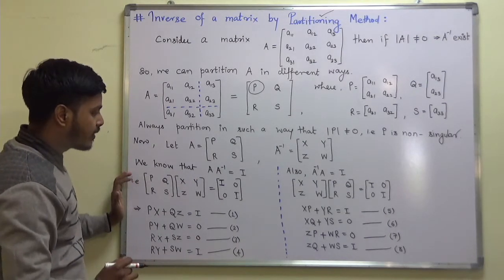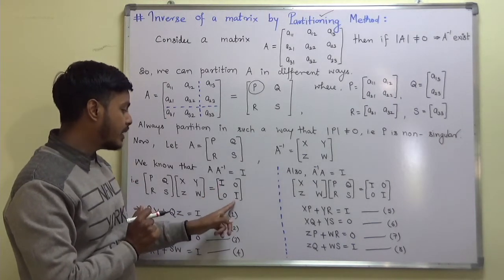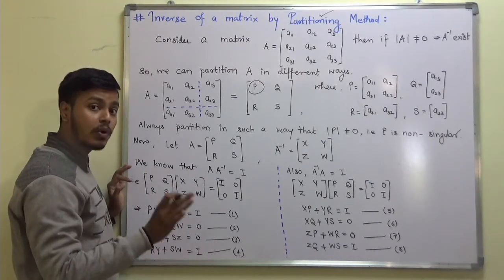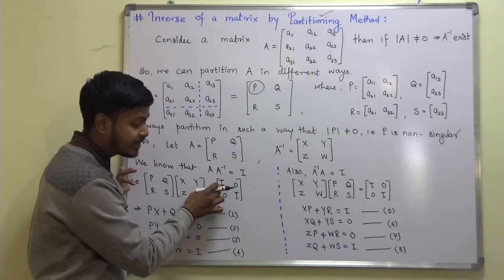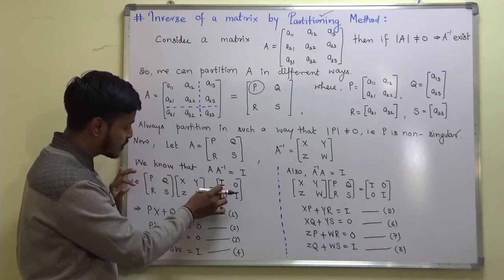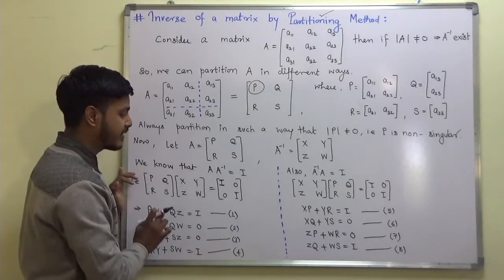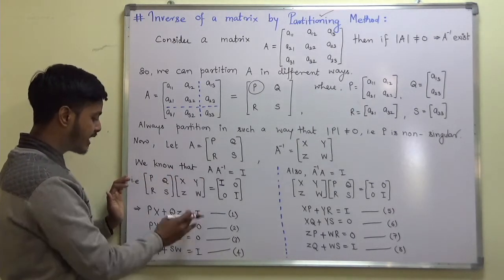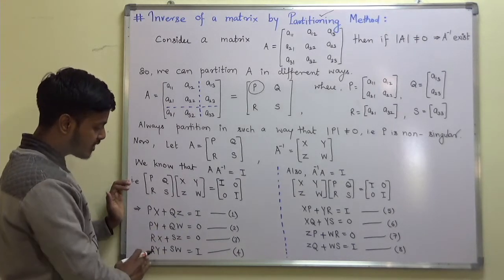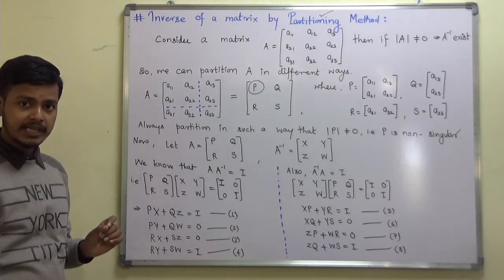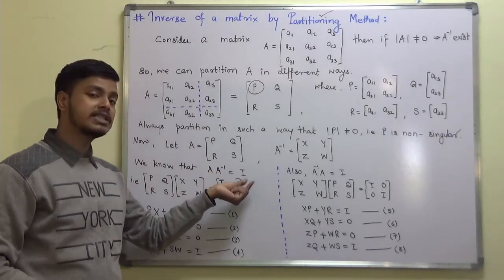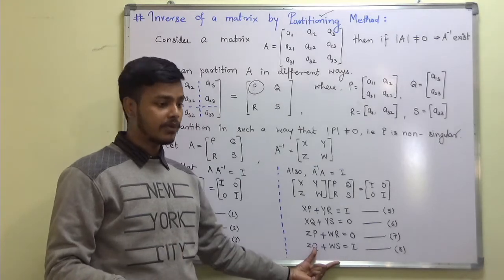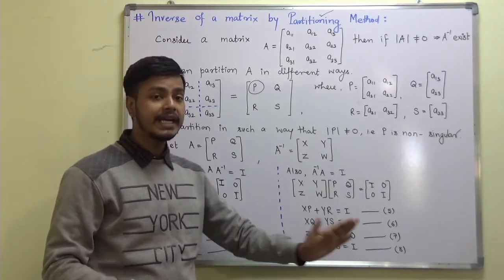Here, since P, Q, R, S, X, Y, Z, W all represent matrices and not numbers, I have written I zero, zero I — where this I corresponds to the two by two identity matrix and this I corresponds to the one by one identity matrix. Solving the block equations: first row first column is equation one, first row second column is equation two, second row first column is equation three, and second row second column is equation four. We also know that A inverse times A equals I, which gives us four more equations, so we have eight equations total.